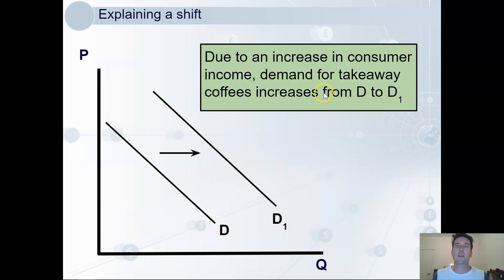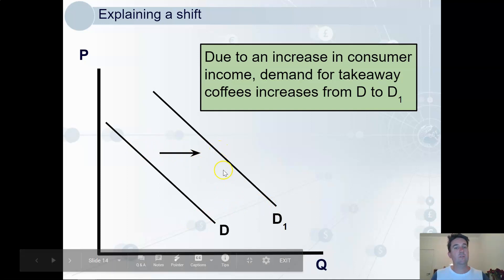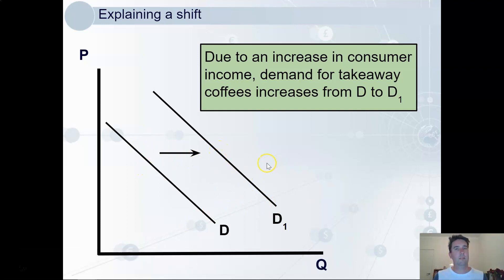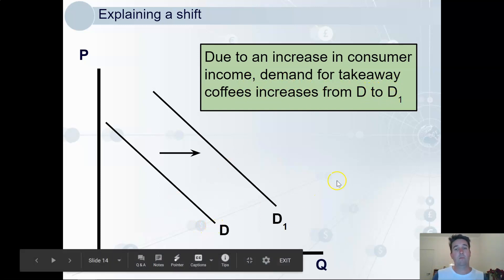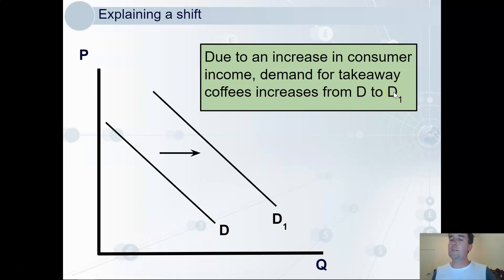In this course, you need to illustrate and explain these shifts in demand with clear communication. I've labelled the axes and curves clearly — P, Q, D, and D1 — with an arrow to show the direction of the shift so at a glance you can tell demand has increased. In the text I've stated the reason, increasing consumer income, and made direct specific reference to the curve labels, D to D1. Always refer to your diagrams, just as you'd always refer to data in a table.